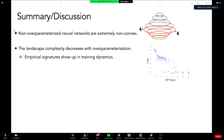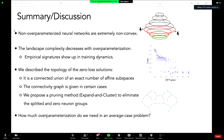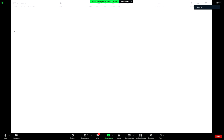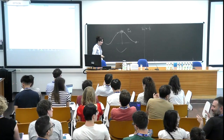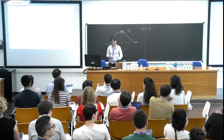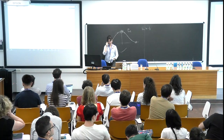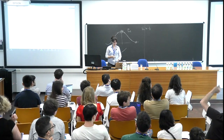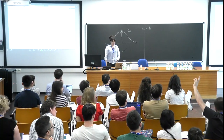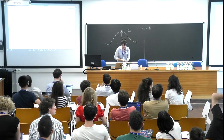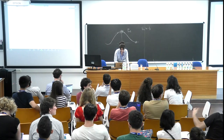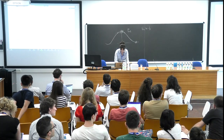Thank you. A comment: looking at the second slide — you observe it's always beneficial to increase over-parameterization. Given this architecture, why aren't Gaussian processes the end of the story? The best test error is also achieved with an infinite-width network, which suggests feature learning in finite-width networks is not so important.